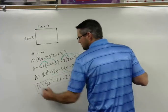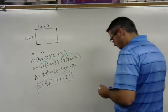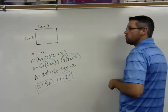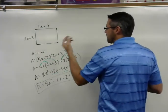So this is an expression that represents our area of that rectangle. Now, when we're talking about perimeter, perimeter, remember, is the distance around an object.